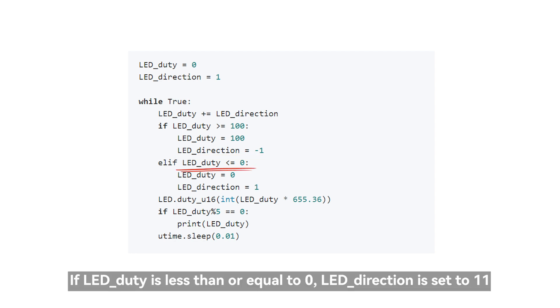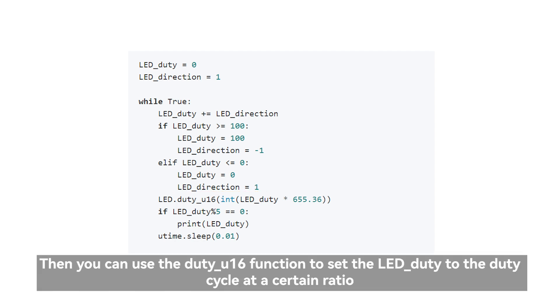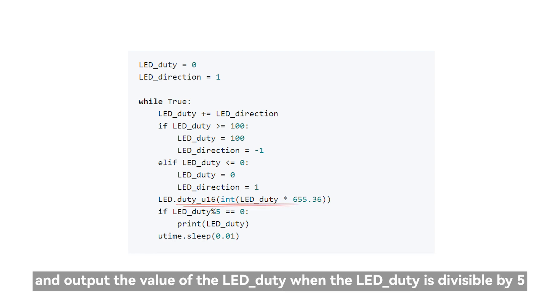Then you can use the duty_u16 function to set the LED_duty to the duty cycle at a certain ratio and output the value of the LED_duty when the LED_duty is divisible by 5.